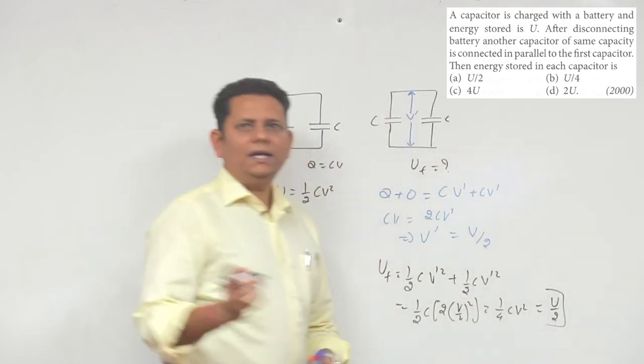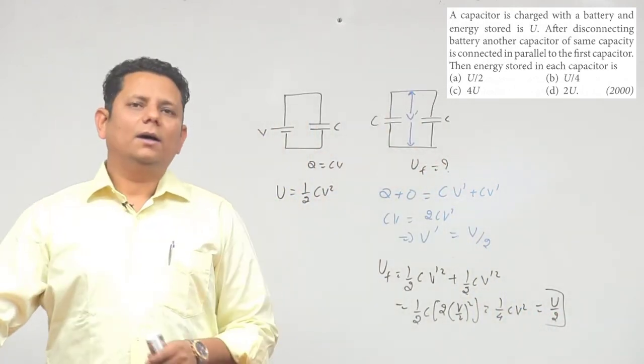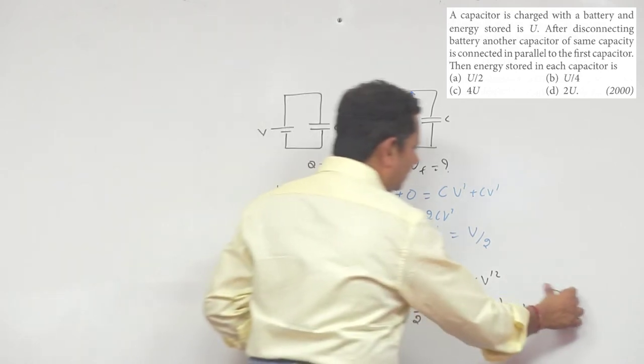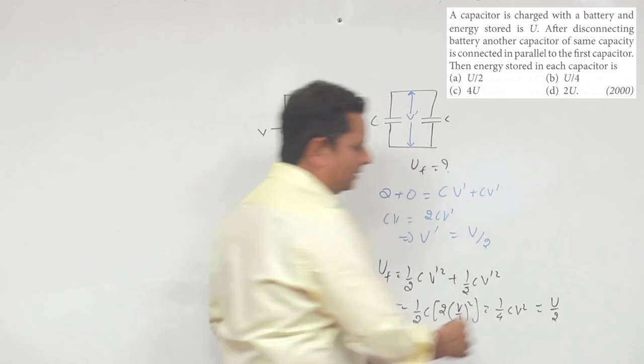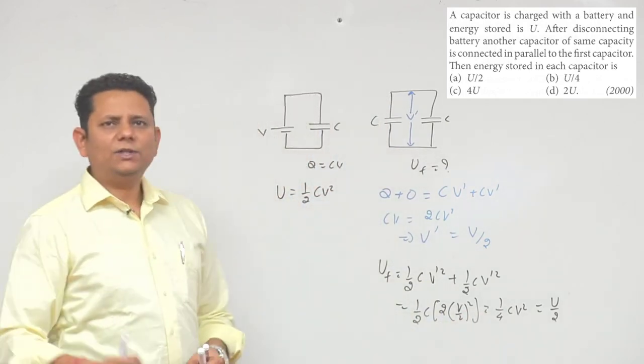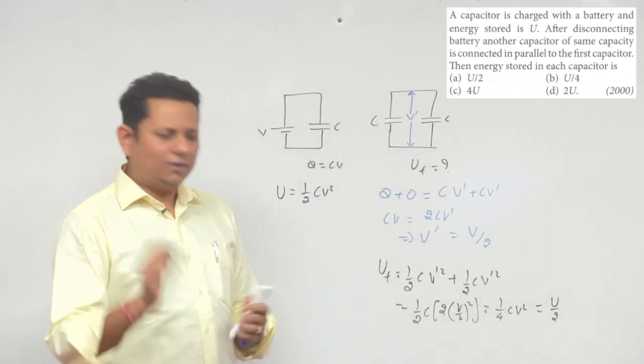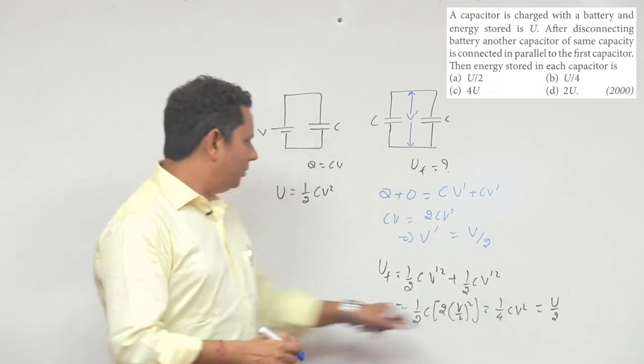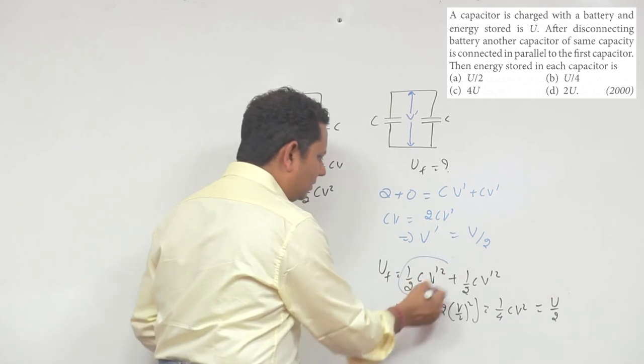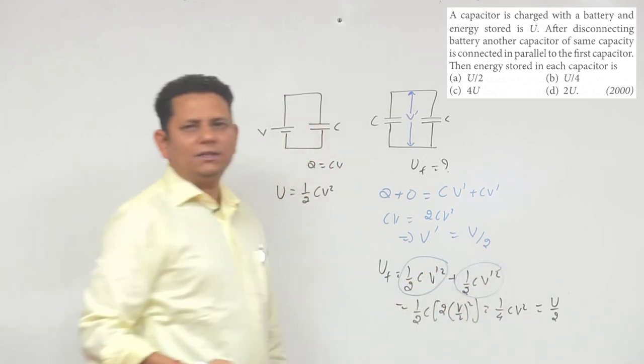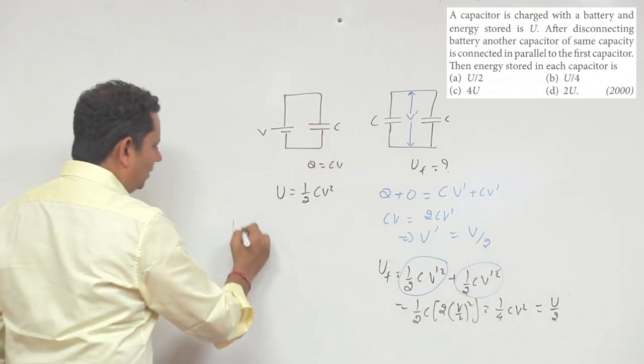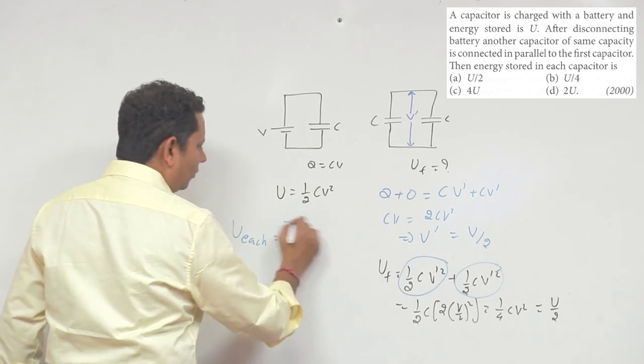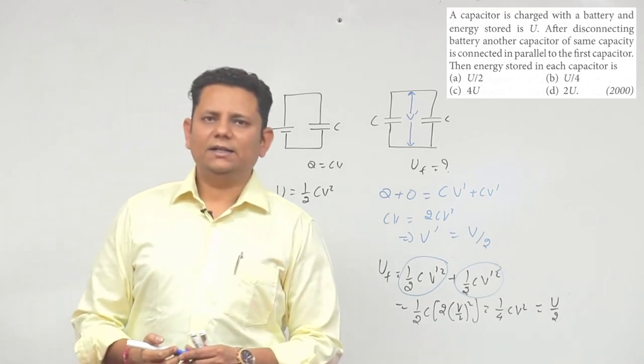In this case, some people make a mistake here - this energy that came is your total energy. We're asked about energy stored in each capacitor. Now each capacitor's energy will be half of this, because this energy is stored in one capacitor and this is stored in the other capacitor. So energy in each capacitor will be U/4.